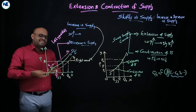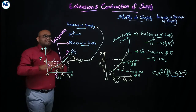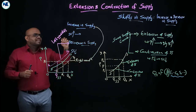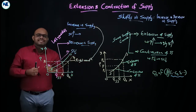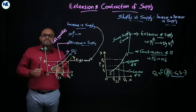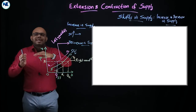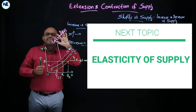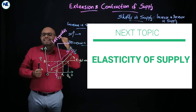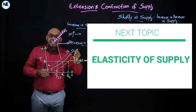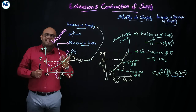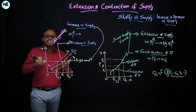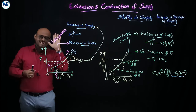So that covers extension and contraction of supply and the shifts in supply — increase and decrease in supply. In the coming video we will discuss elasticity of supply: types including perfectly elastic supply, perfectly inelastic supply, elastic supply, less elastic supply, and unitary elastic supply. Have a nice day, thank you.